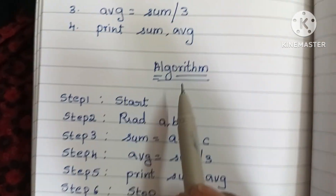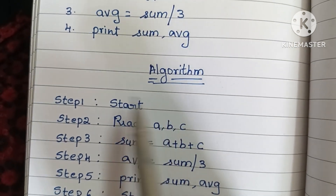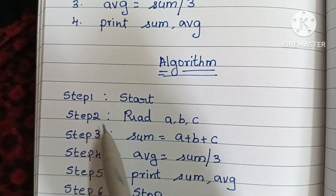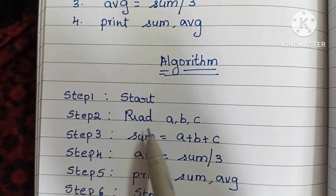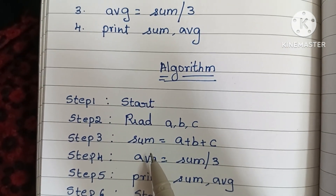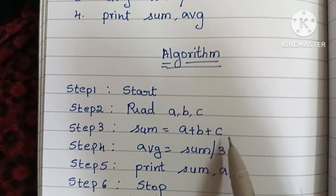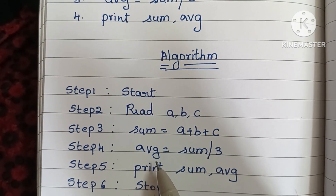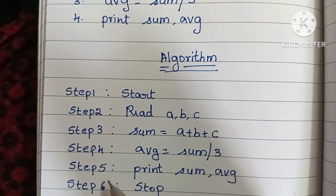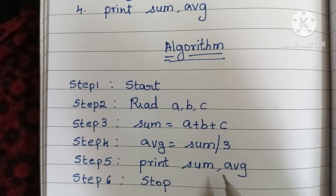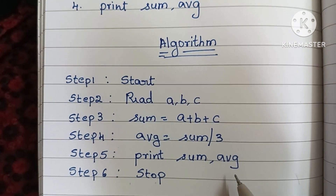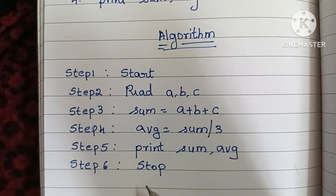Let's see the algorithm to find sum and average of three numbers. Step 1: Start. Step 2: Read a, b, c. Step 3: sum is equal to a plus b plus c. Step 4: average is equal to sum divided by 3. Step 5: print sum and average.